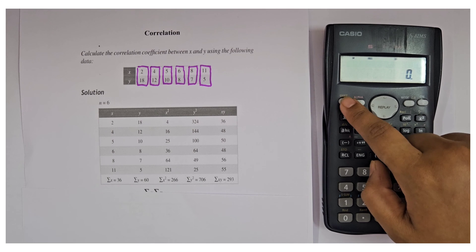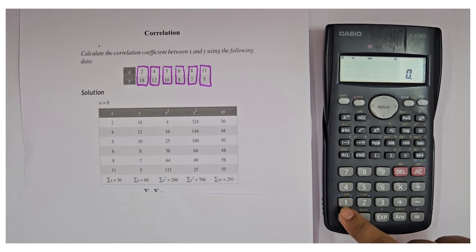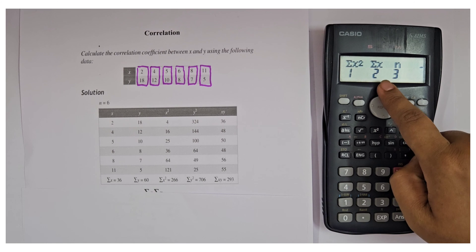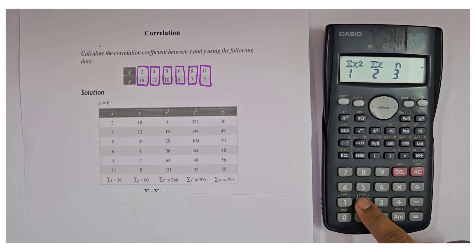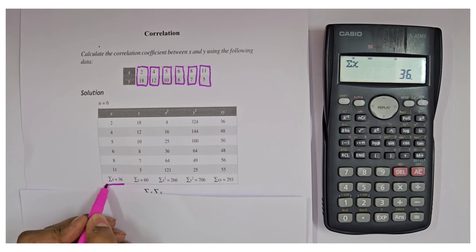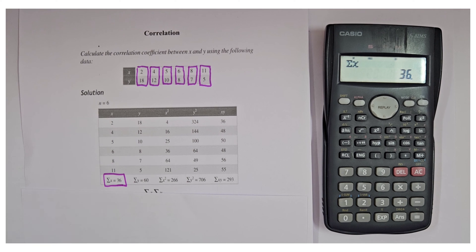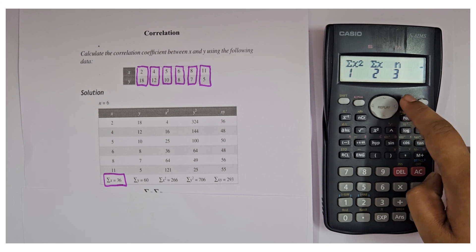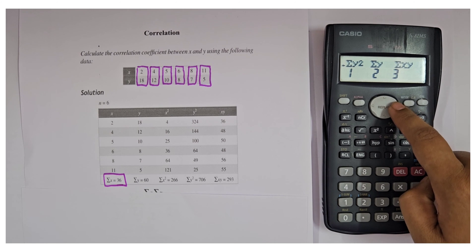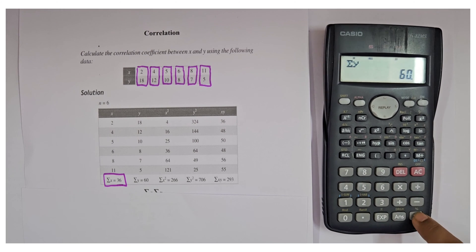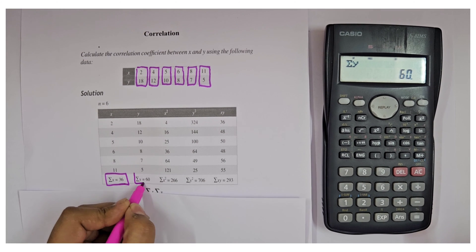After pressing AC, press SHIFT then 1. Here you will find all of these: Σx², Σx, and more. Let's find Σx — press 2 and then equal to. You will be able to compare your answers to check whether they are correct or not. Press SHIFT 1 again, press the next button, and press 2 equal to — Σy comes as 60.